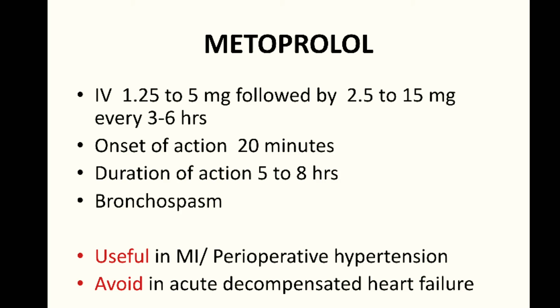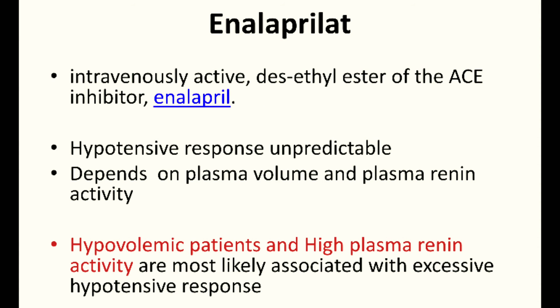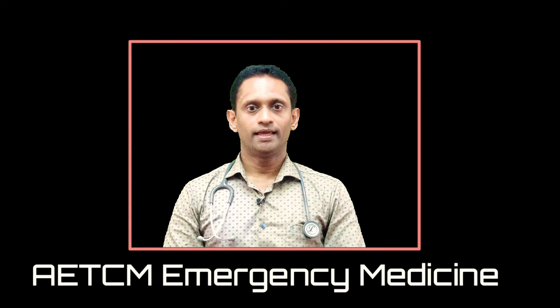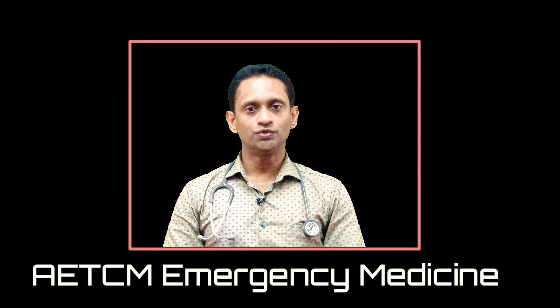One should avoid metoprolol in acute decompensated heart failure. Enalaprilat is the intravenous active form of the ACE inhibitor enalapril. The hypertensive dose response is unfortunately unpredictable, depending on plasma volume and plasma renin activity. Hypovolemic patients and those with high plasma renin activity are more likely to have an excessive hypotensive response. Dosage is 1.25 to 5 mg every six hours, with onset of action within 15 minutes and duration of 12 to 24 hours. It is contraindicated in pregnancy, severe renal artery stenosis, and severe hyperkalemia.